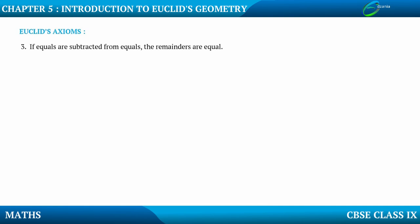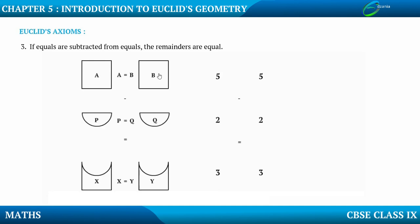Similarly, the third axiom: if equals are subtracted from equals, the remainders are equal. When two equals are subtracted, the resultant will also be equal. We have A is equal to B, or say 5 is equal to 5. From A if we remove P, and from B if we remove Q, the end products X and Y will also be equal. So when equals are subtracted from equals, the remainders are equal. For example, 5 minus 2 gives 3, and 5 minus 2 also gives 3, so 3 is equal to 3.